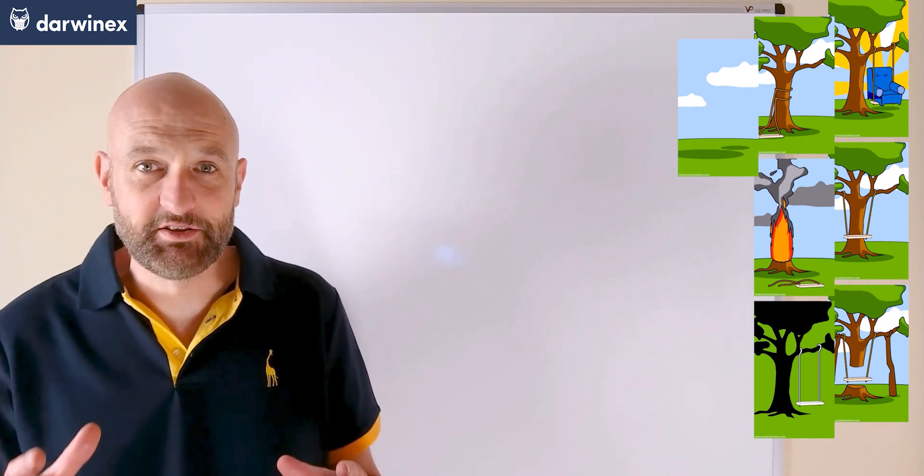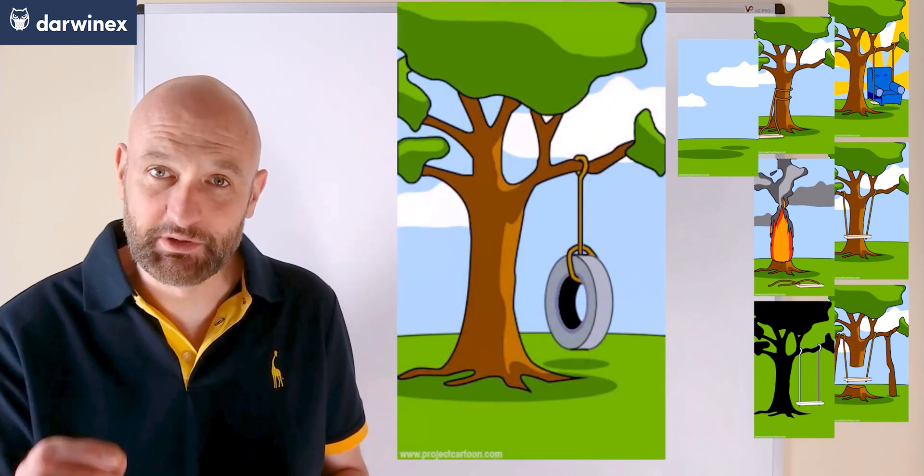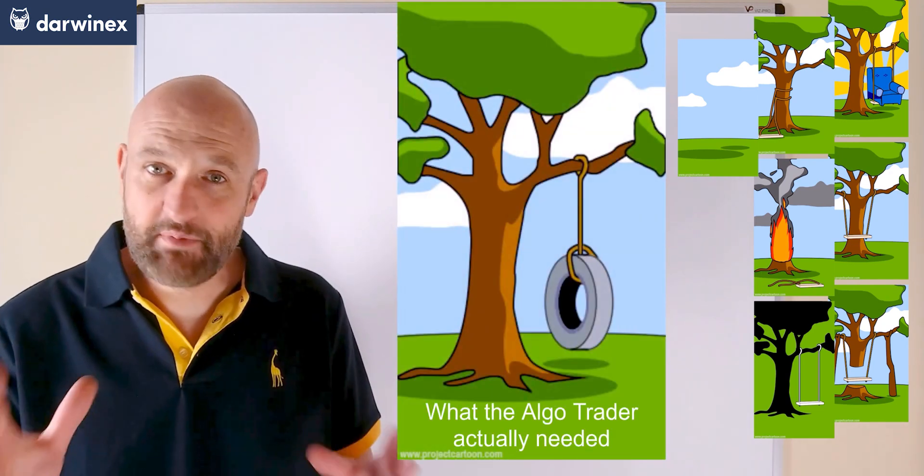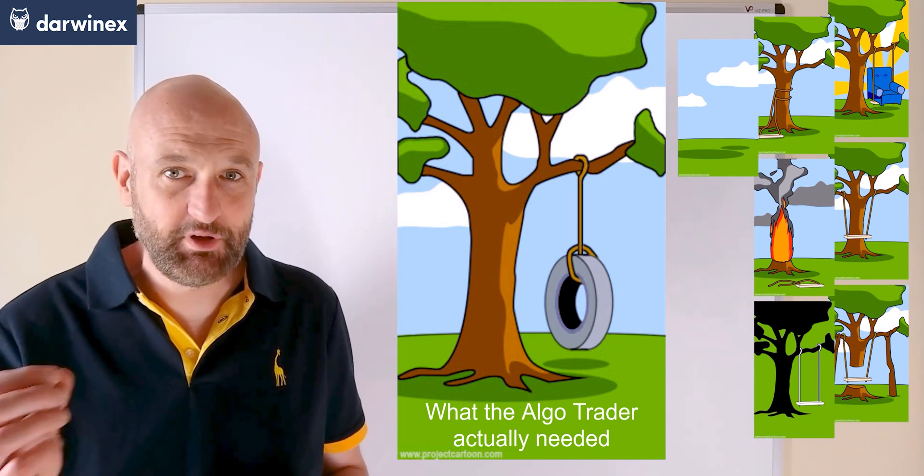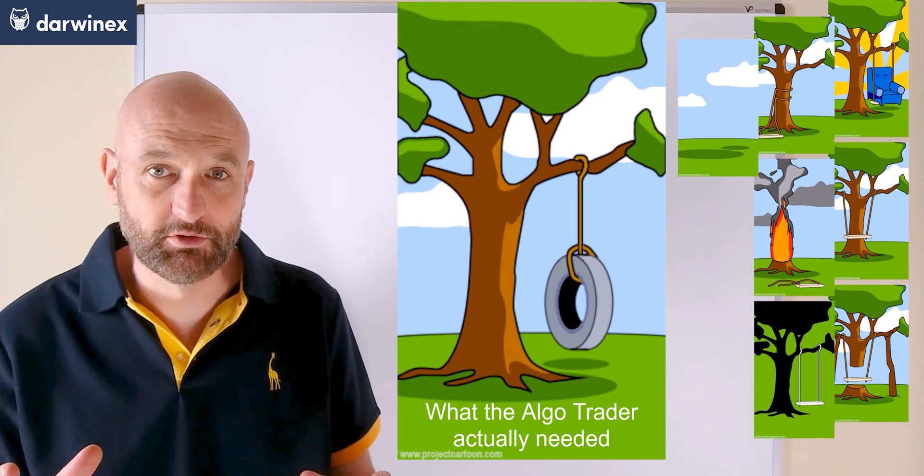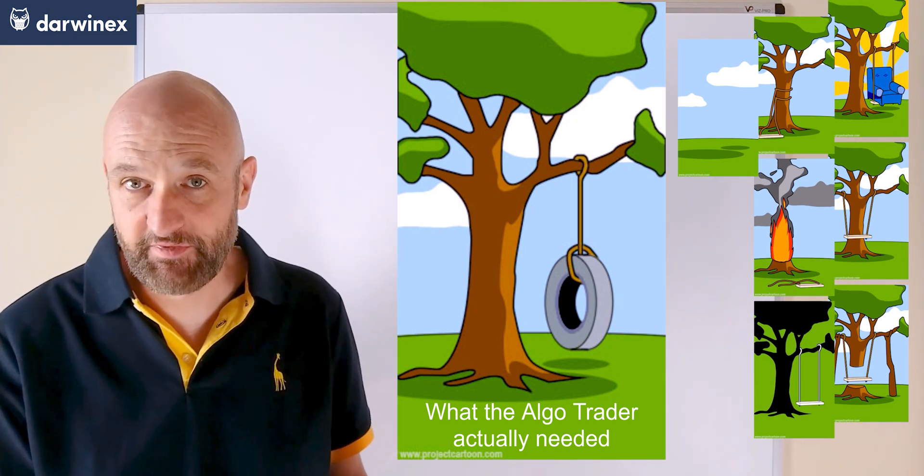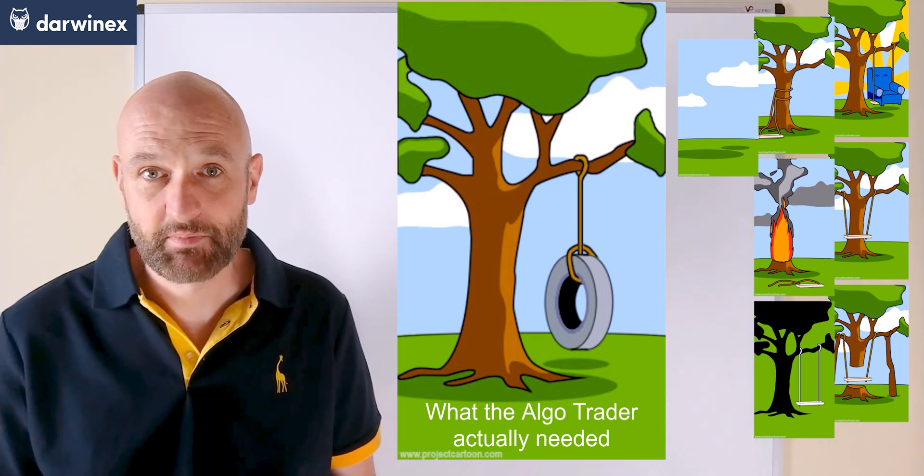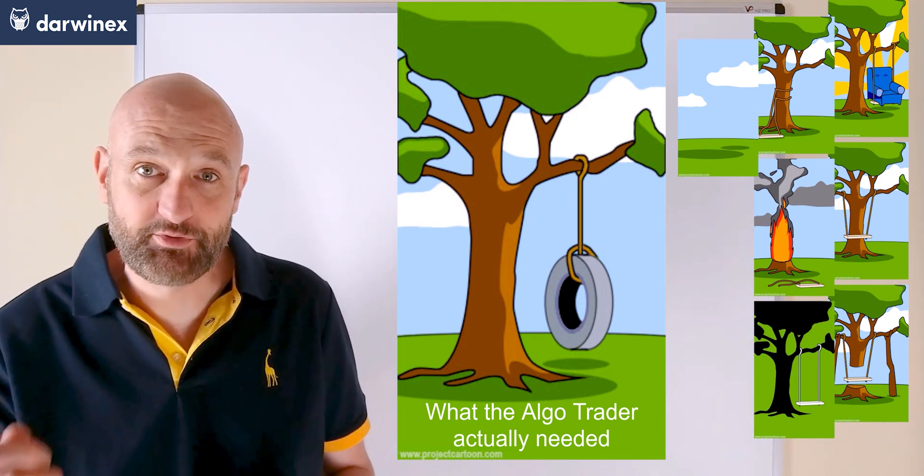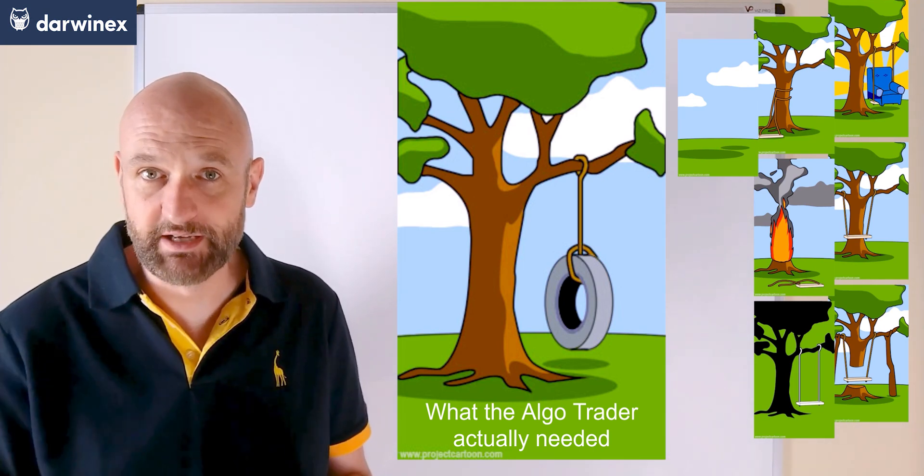let's just consider the kind of system that the algo trader actually needed. For me, simplicity is beautiful. A simple algo system with a few simple rules is much harder to overfit. It can be understood so much more easily.